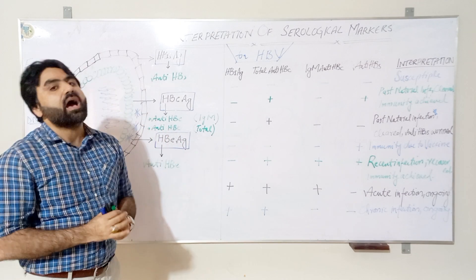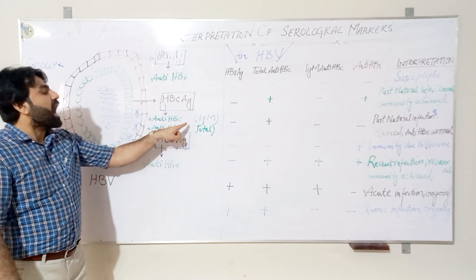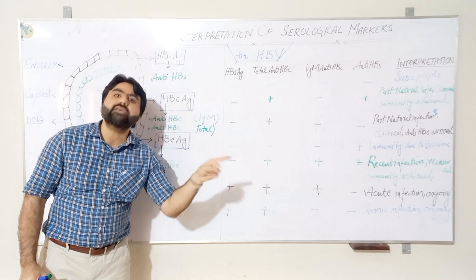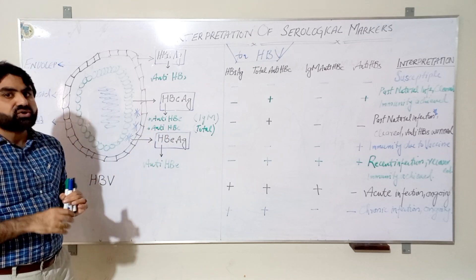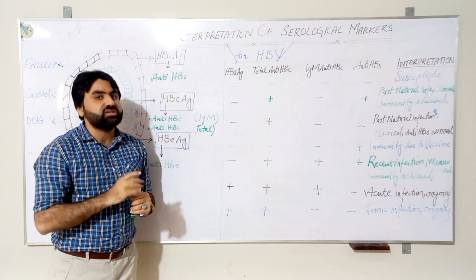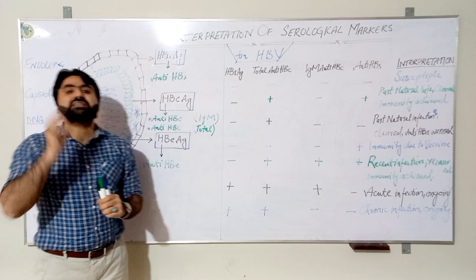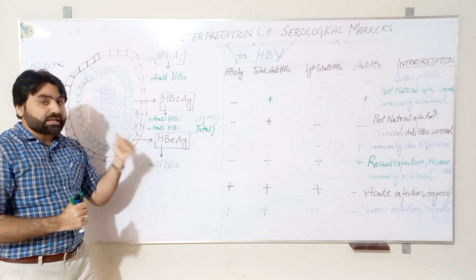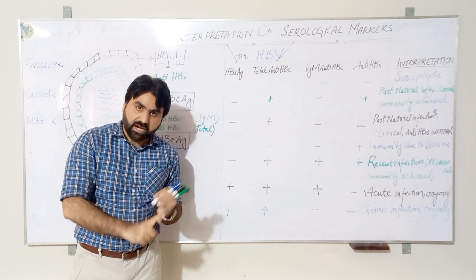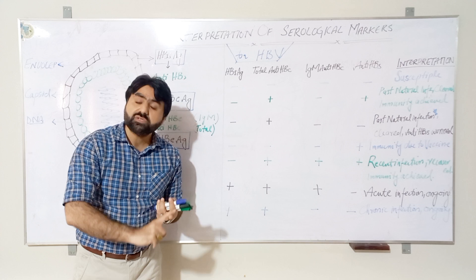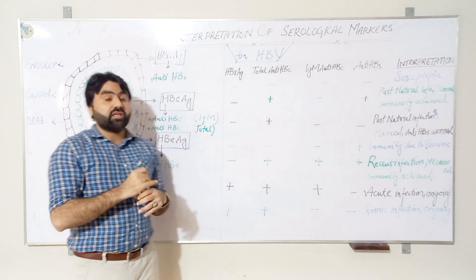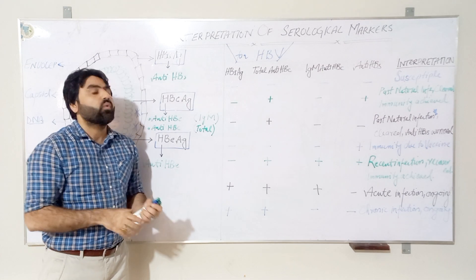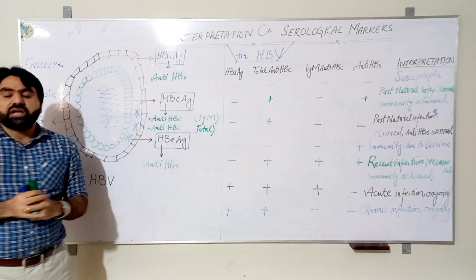After six months, IgM anti-HBc declines and disappears from the patient's serum. Therefore, IgM anti-HBc always indicates recent or acute infection. Total anti-HBc, which is predominantly IgG, is the most constant marker of hepatitis B virus used in clinical interpretation, because it is produced in both acute and chronic infection and is also present after recovery.